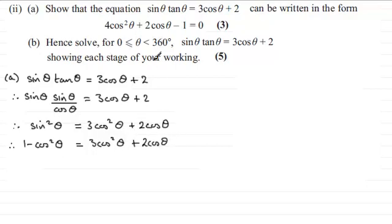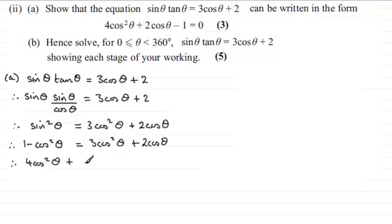We're nearly there. Adding cos squared theta to both sides gives us 4 cos squared theta on the right. We've got the 2 cos theta, and then subtracting 1 from both sides gives us 4 cos squared theta plus 2 cos theta minus 1 equals 0. So we've shown that.